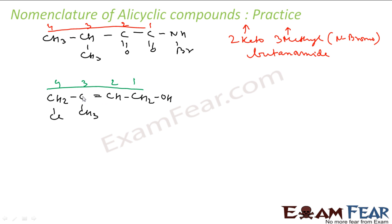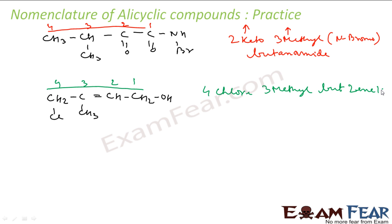So let's see the prefixes. I have chloro and I have a methyl group — two prefixes. Chloro comes first, then methyl in alphabetical order. So it will be 4-chloro, 3-methyl. I have four carbons, so bute. At second position I have a double bond — but-2-ene. At first position I have an alcohol, so but-2-en-1-ol. Or you can just write but-2-enol, because if you don't mention position one for the alcohol, it is implicit that it is at the first position.